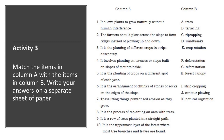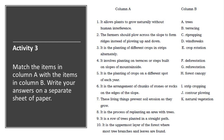Activity 3: Match the items in Column A with the items in Column B. Write your answers on a separate sheet of paper. 1. It allows plants to grow naturally without human interference. 2. Farmers plow across the slope to form ridges instead of plowing up and down. 3. It is the planting of different crops in strips alternately. 4. It involves planting on terraces or steps built on slopes of a mountainside. 5. It is the planting of crops on a different spot each year. 6. It is the arrangement of chunks of stones or rocks on the edges of the slope. 7. These living things prevent soil erosion. 8. It is the process of replanting an area with trees. 9. It is a row of trees planted in a straight path. 10. It is the uppermost layer of the forest where most tree branches and leaves are found.